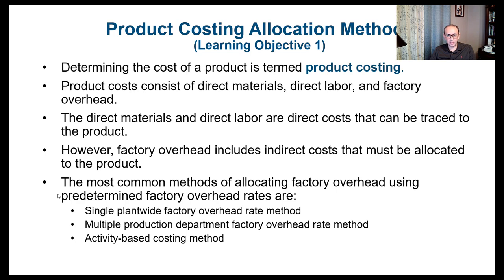Direct material, direct labor, and factory overhead — the direct material and direct labor are direct costs that can be traced to the product. But on the other hand, factory overhead includes indirect costs that must be allocated to the product, because we cannot really trace it directly to the product.